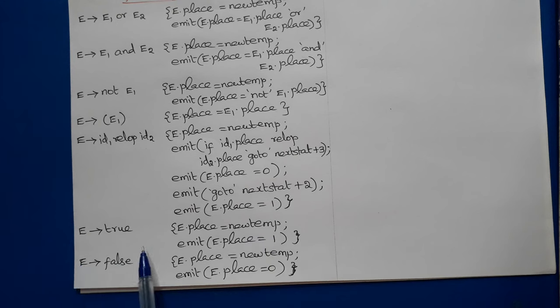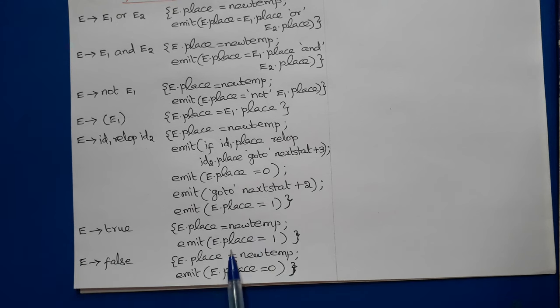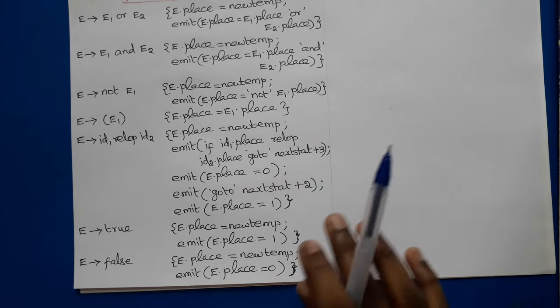For E → true: E.place = new_temp, then that new_temp is assigned 1. Similarly for E → false, 0 is assigned.